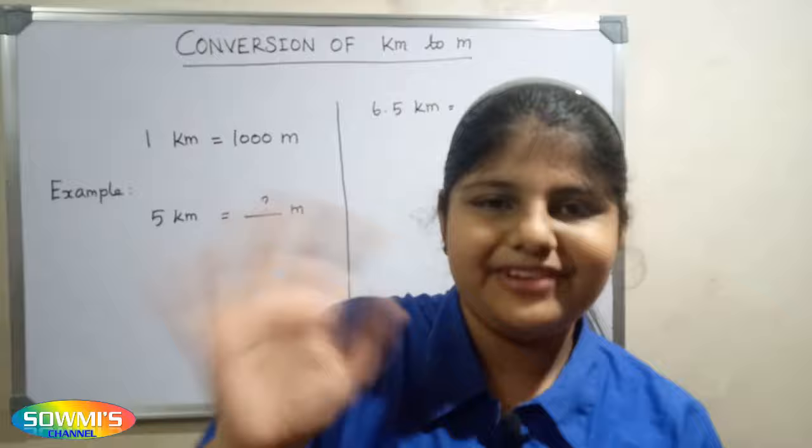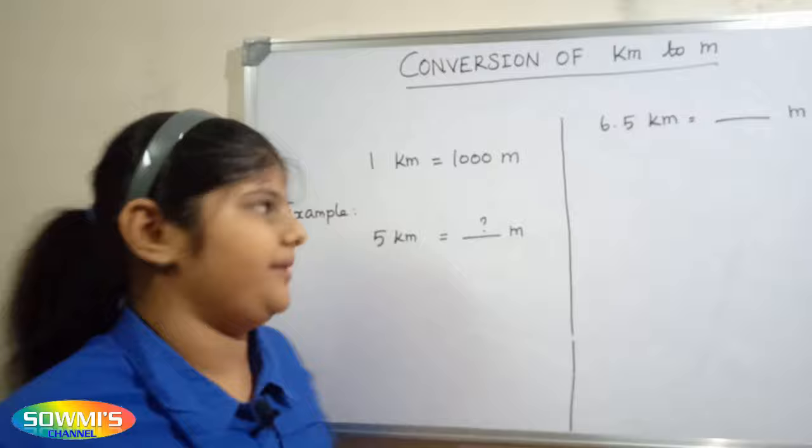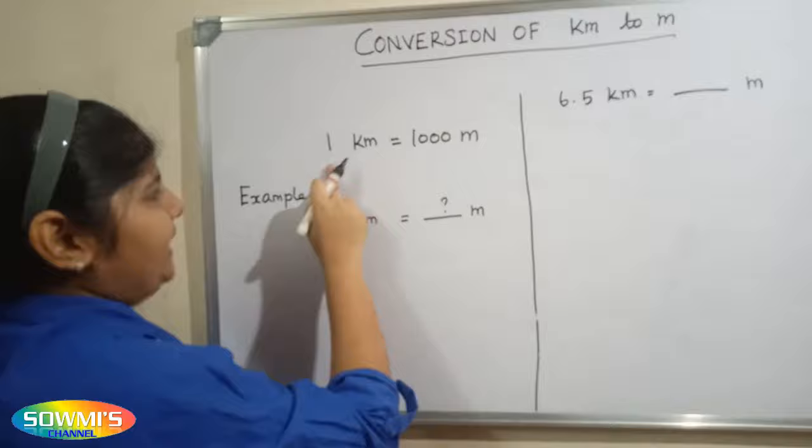Hi friends, in this video we are going to see how to convert kilometers into meters. The formula for conversion of kilometers into meters is 1 kilometer is equal to 1000 meters. For example,